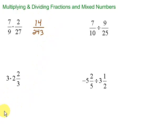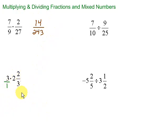Let's take a look at this one. When we have a situation where we have a whole number being multiplied by a mixed number, we need to convert the whole number into a fraction by simply putting it over 1. We also need to convert the mixed number into an improper fraction. The process is to start at the bottom: 3 times 2 is 6, plus 2 is 8. So if I rewrite, we have 3 over 1 times 8 over 3.